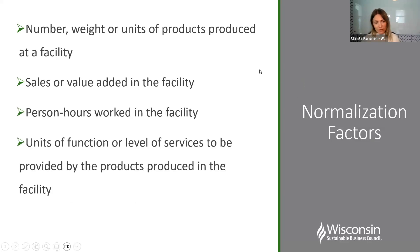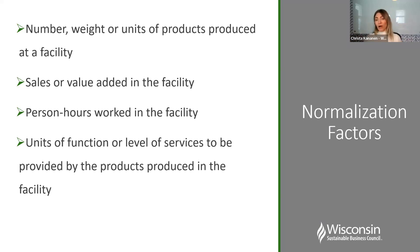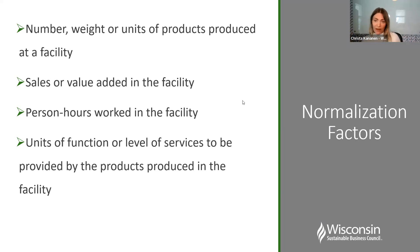Some of the factors you might use to normalize or adjust your metrics would be, for example, the number, weight, or units of production; maybe it's sales; maybe it's hours worked at the facility; maybe it's number of employees — gallons of water per employee, for instance. It really depends on your specific situation, your specific facility, and understanding what drives your performance in each of those topics or areas of sustainability, and then what external factors you should account for.